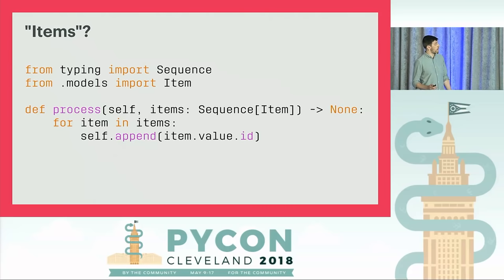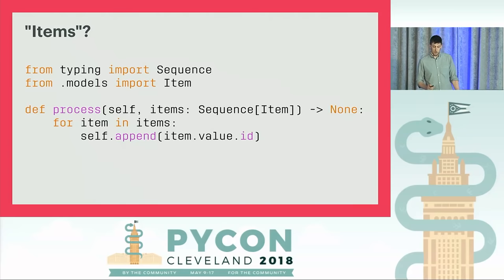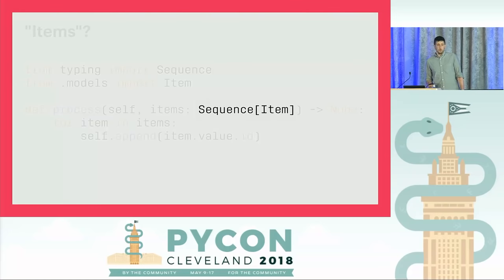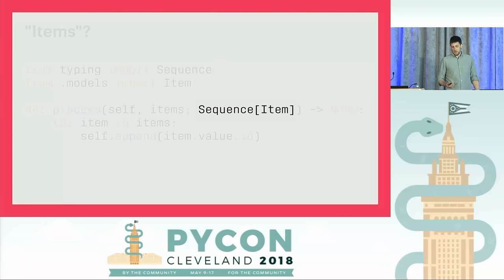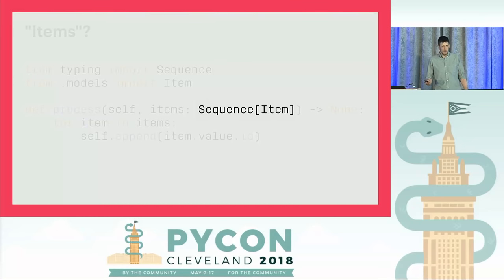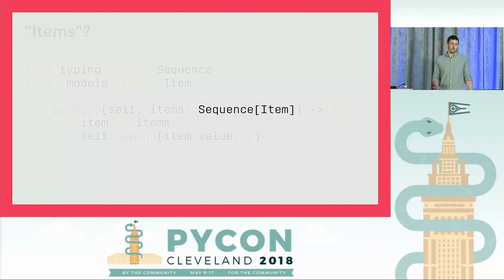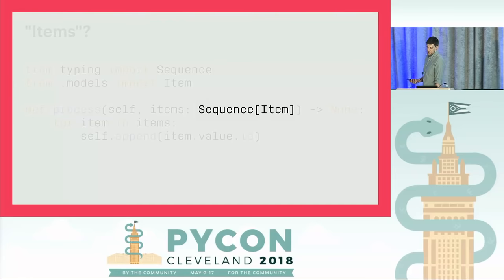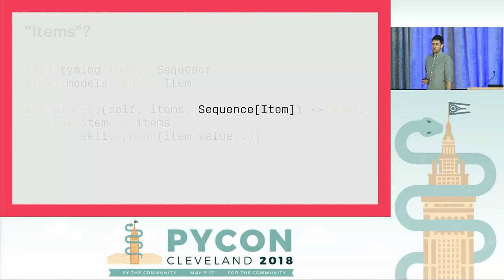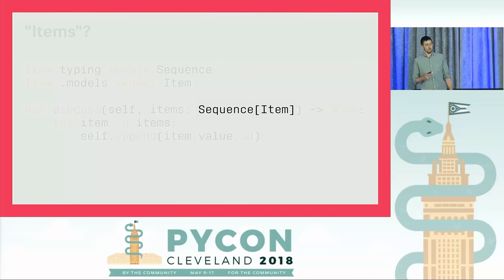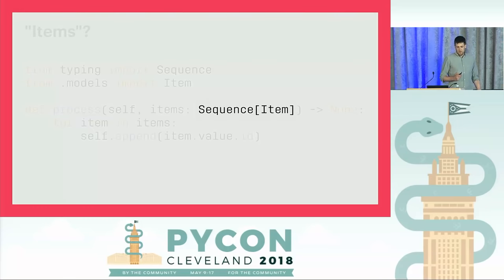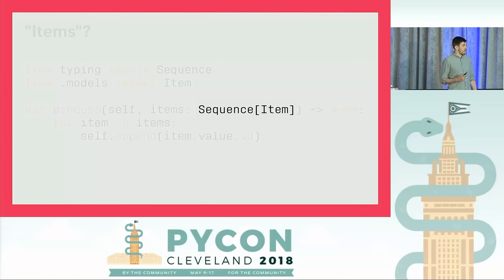With a type annotation, all of that goes away. Now I know exactly what I can expect to receive — a sequence of this particular item class. I can go directly to the class and see what attributes and methods it has. People have been putting the same information into docstrings for years, but the problem is someone will eventually update a function signature and forget to update the docstring, making it obsolete and arguably worse than useless. Whereas a type annotation can automatically be checked for correctness, so it has to remain up-to-date with the code.